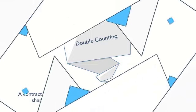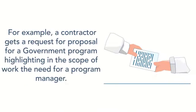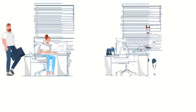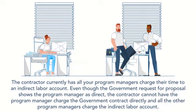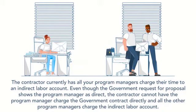The federal government uses the term "double counting" when referring to this same-purpose, like-circumstances issue with direct versus indirect — where a contract ends up paying for an effort both directly and then also sharing in an allocation of that same type of effort going to all contracts. That's what they don't want to happen. For example, a contractor gets a request for proposal for a government program highlighting in the scope of work that it needs a program manager. If the contractor currently has all of their program managers charging their time indirect to a labor account in one of the indirect pools, they cannot have a program manager charge the government contract directly and then allocate all other program managers indirectly.